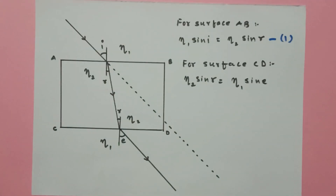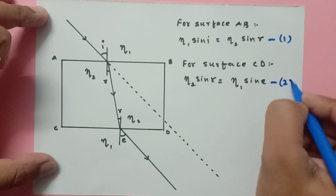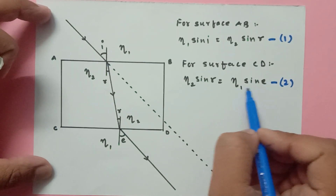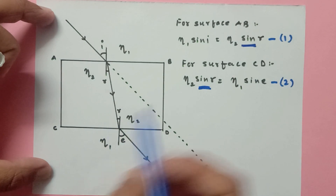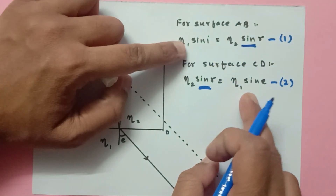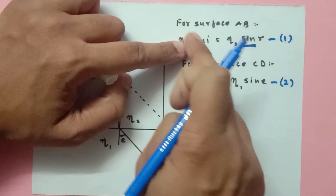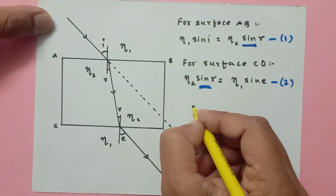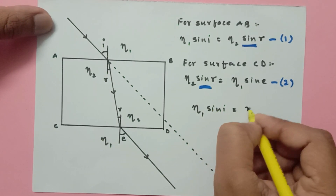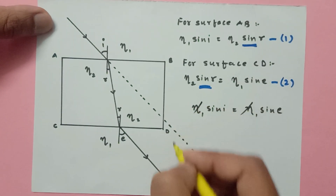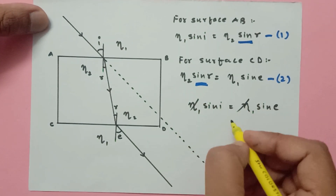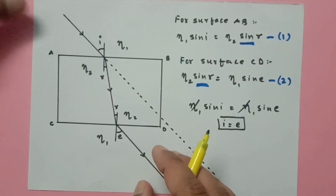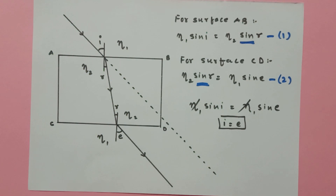Now looking at both equations: eta 1 sin i equals eta 2 sin r, and eta 2 sin r equals eta 1 sin e. Since both equal eta 2 sin r, we get eta 1 sin i equals eta 1 sin e. Eta 1 cancels from both sides, and sin of two angles are only equal if the angles are equal — so angle i equals angle e. This proves the two angles are the same using Snell's Law.